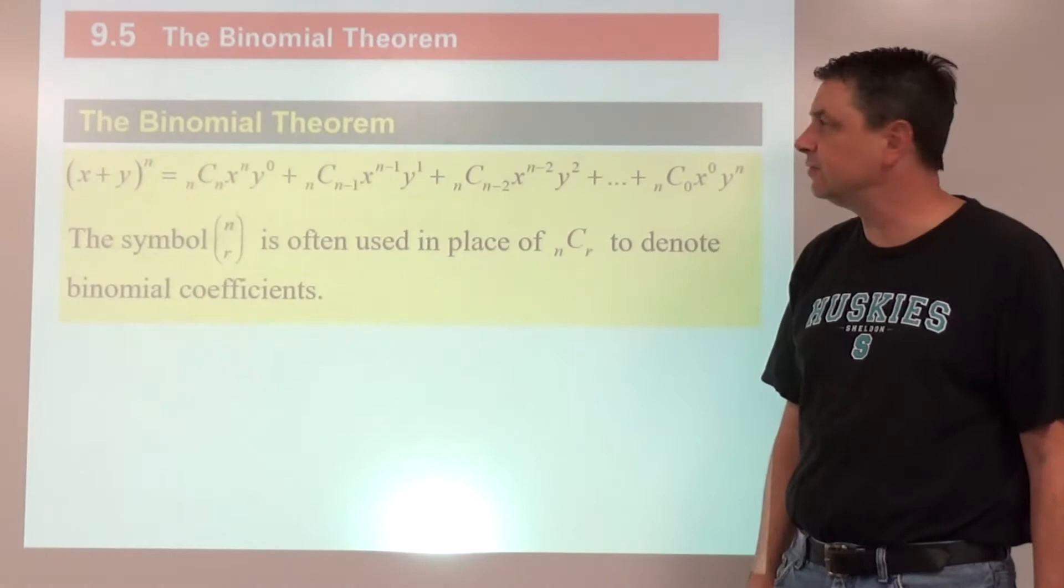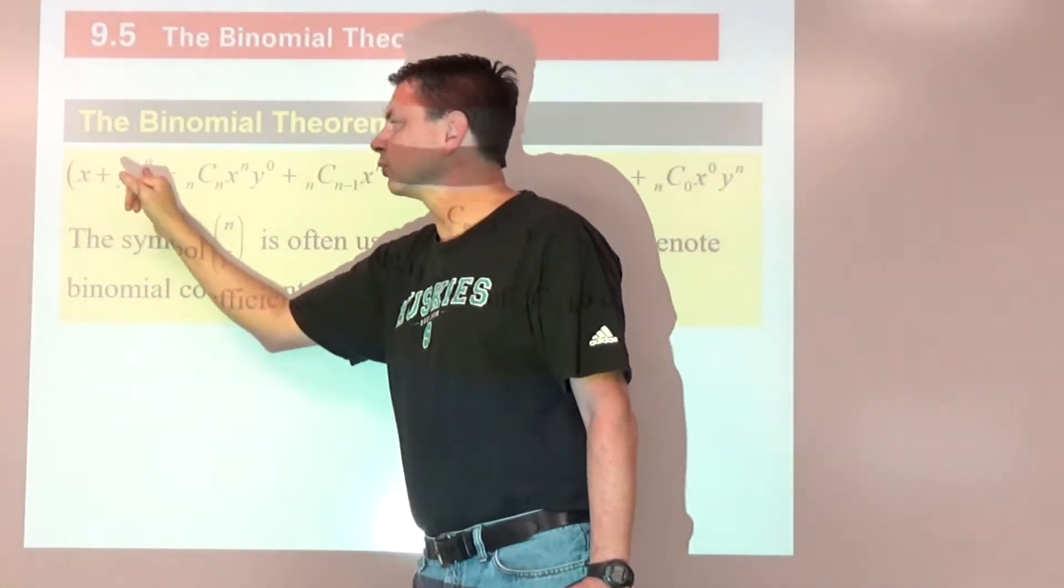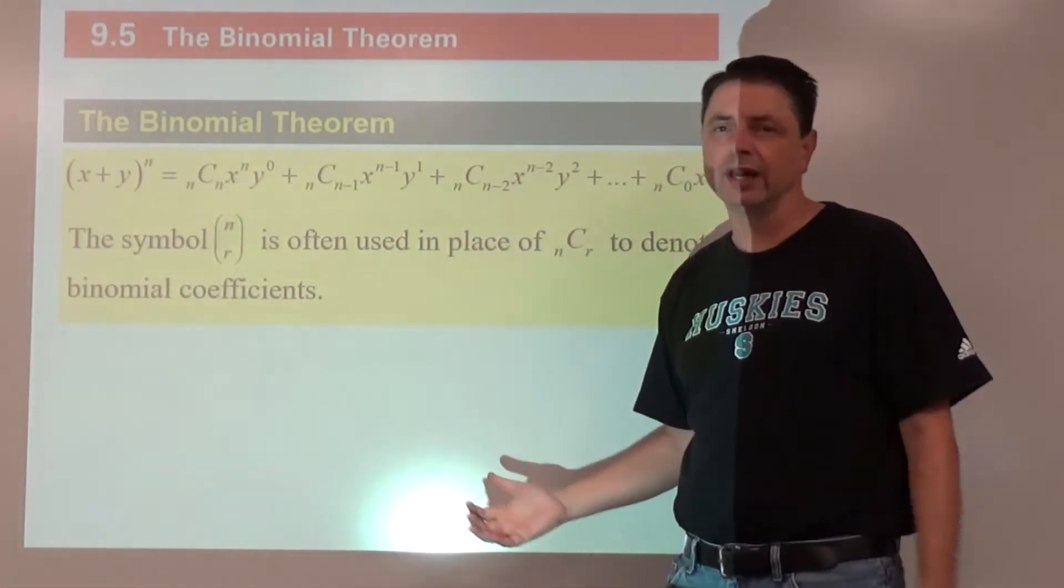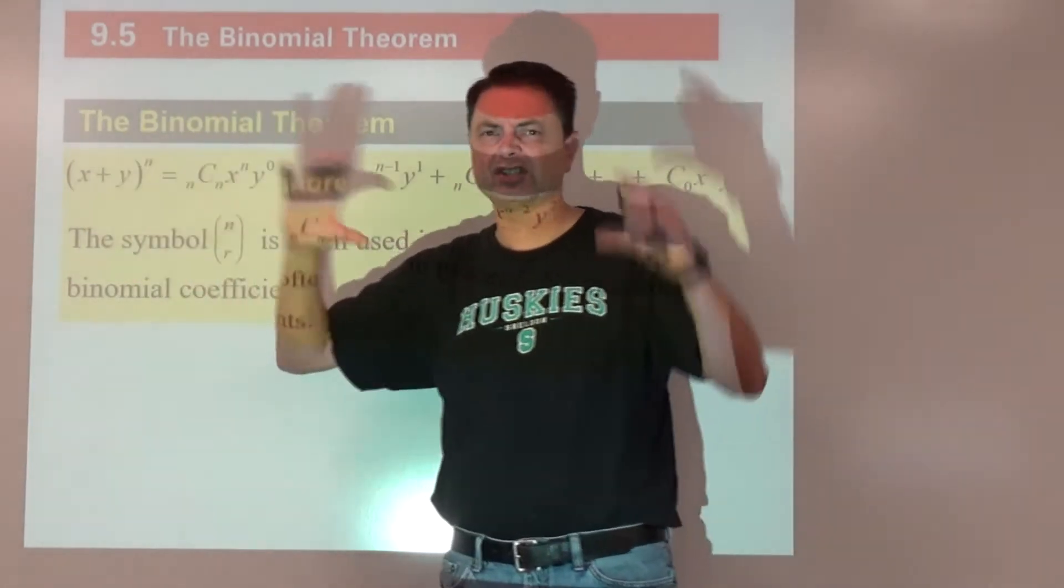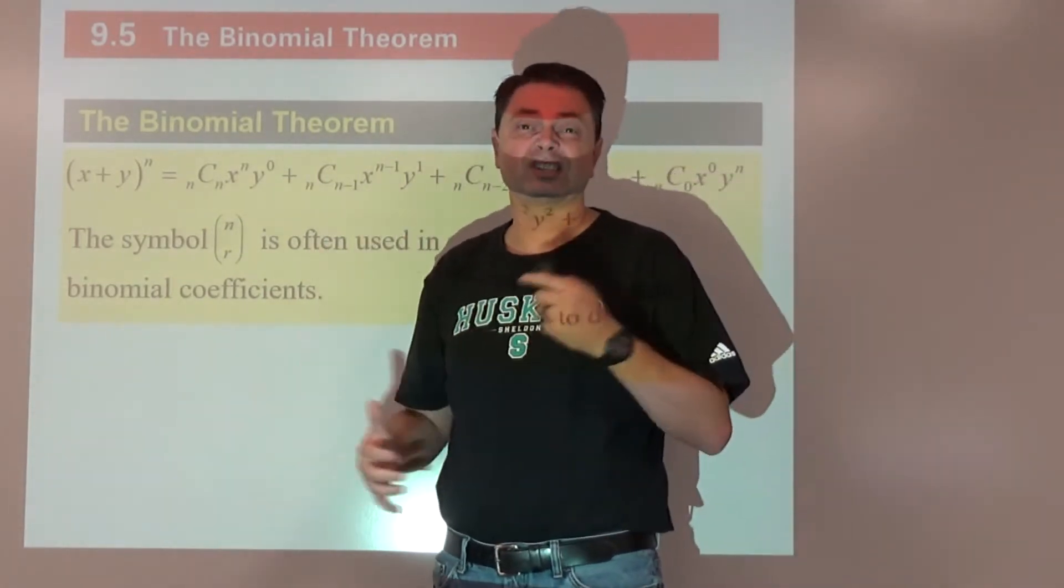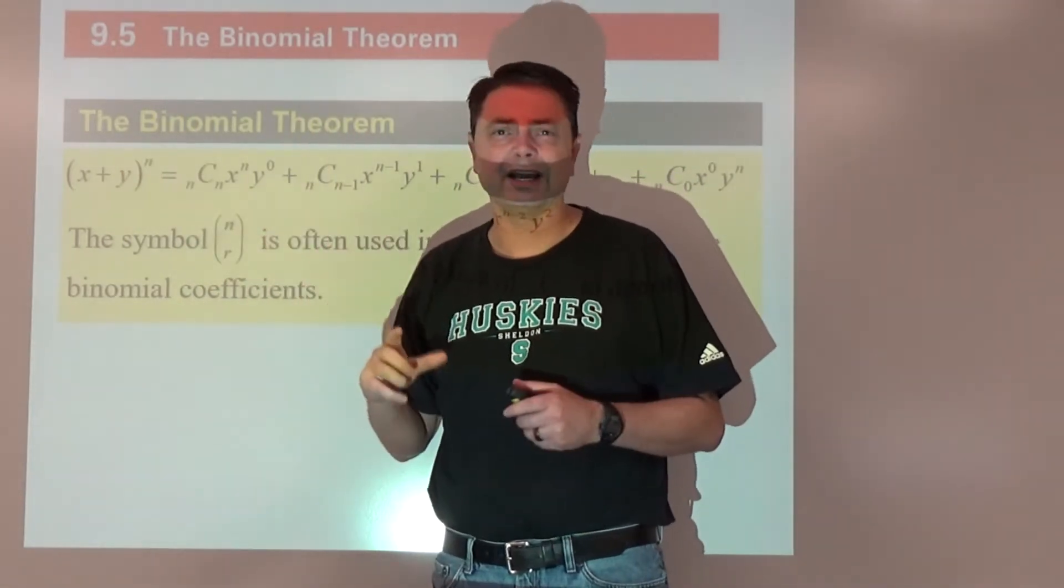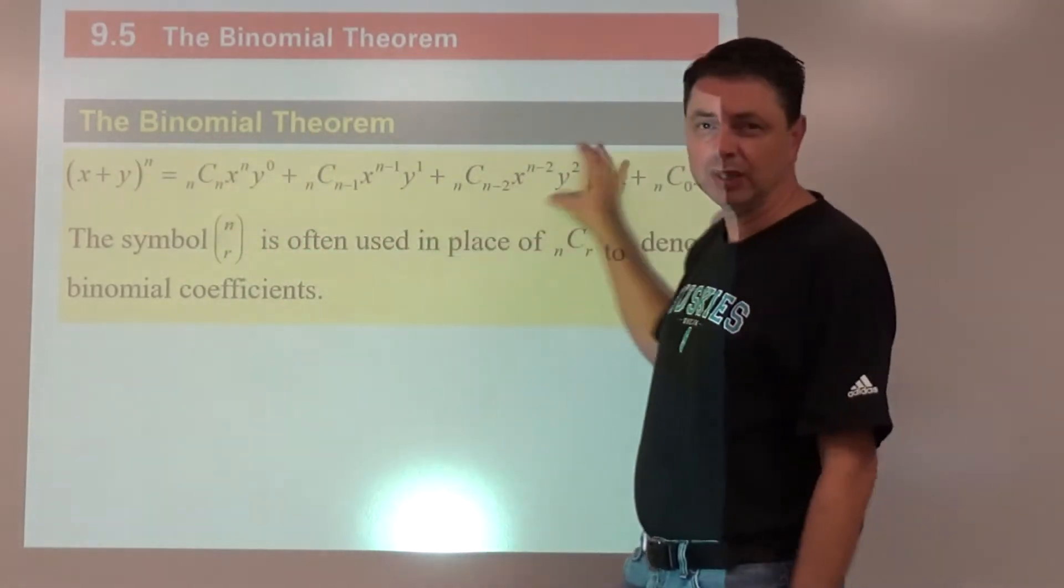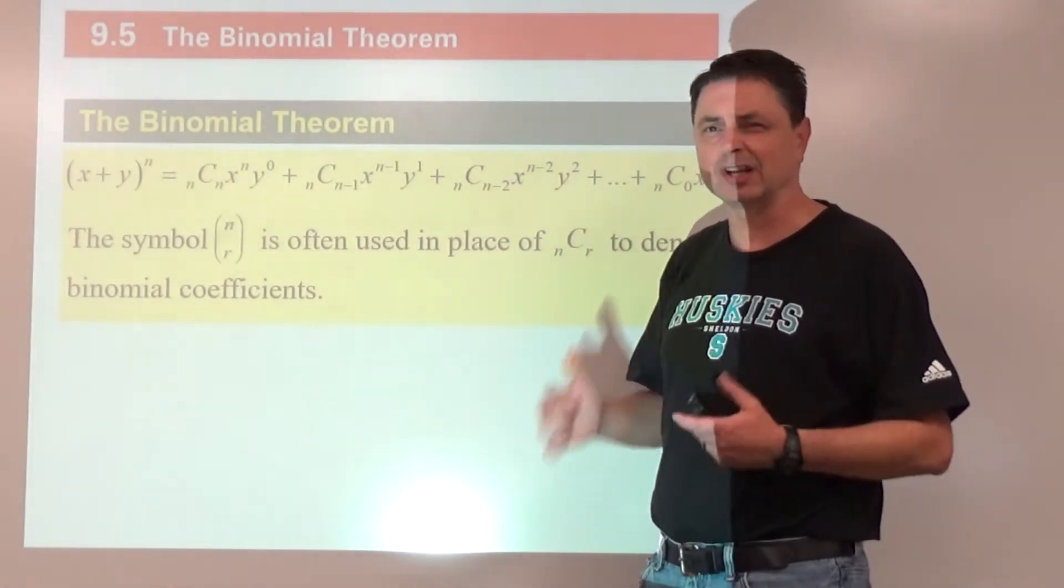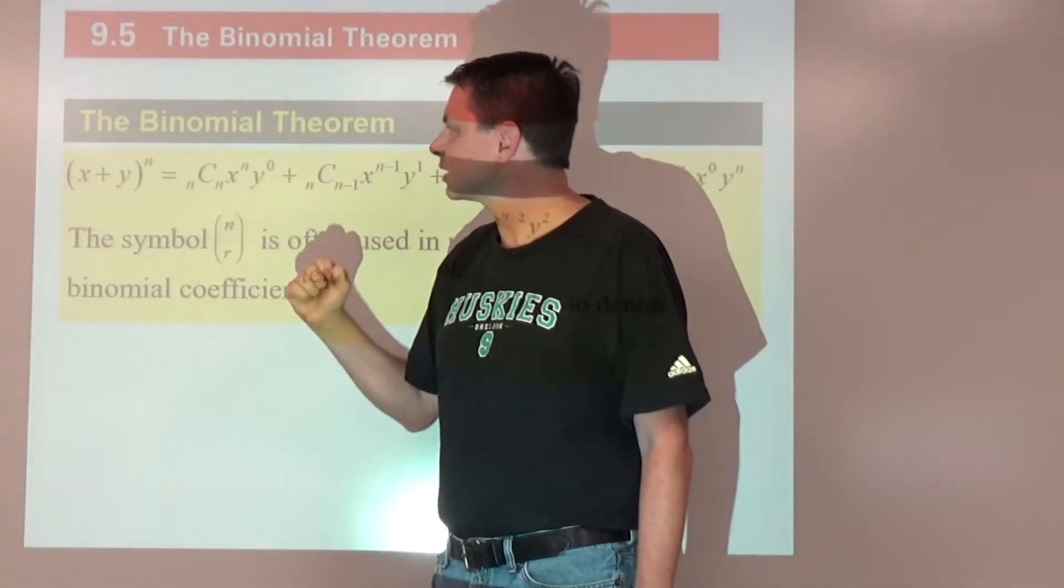Alright, this is lesson 9.5, the binomial theorem. So if we have a binomial that's being raised to a power, we can expand this out in a certain way. Now if this was maybe squared, I would just definitely multiply it out. If it's cubed, it might be just as efficient to multiply it out. But any time you get to an exponent of 4 or higher, this is definitely going to be one, a time saver, and two, we're going to probably be more accurate, and there's less opportunities to make mistakes.